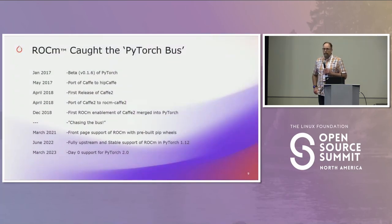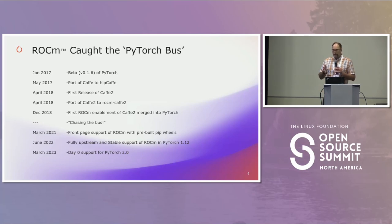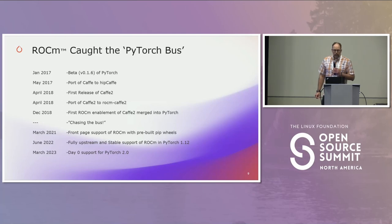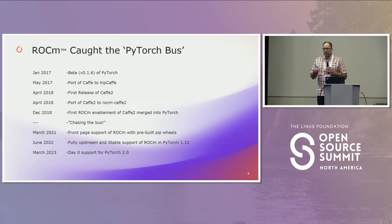Let's talk about PyTorch and AMD catching the bus. PyTorch started in 2016, and by 2017 I was at AMD looking at all the different available frameworks — I think there were seven or eight on my roadmap at the time. We had a beta in 2017 and did some porting of Caffe to HIP. HIP is a programming language very similar to CUDA — if you're experienced with CUDA, it looks the same and has a similar API. We created a tool called HIPify to convert CUDA code to HIP, and the whole codebase is still CUDA — as you compile it, it targets the AMD device with HIP API calls.